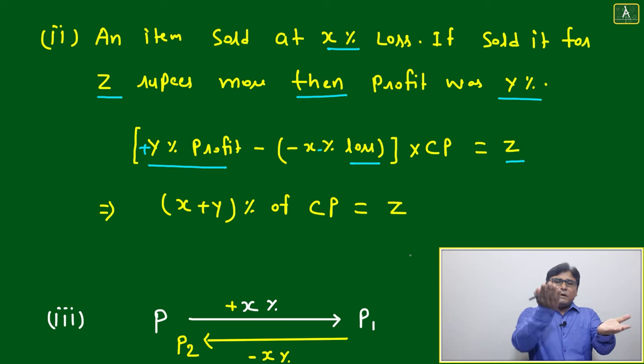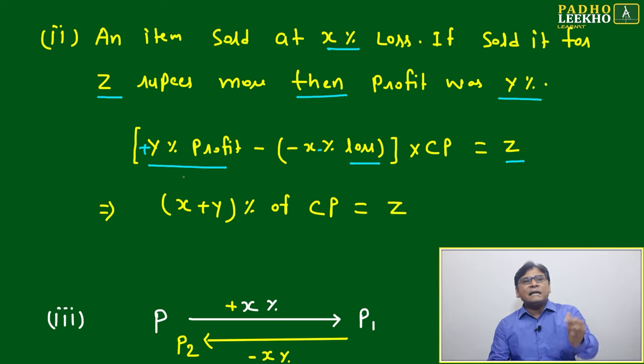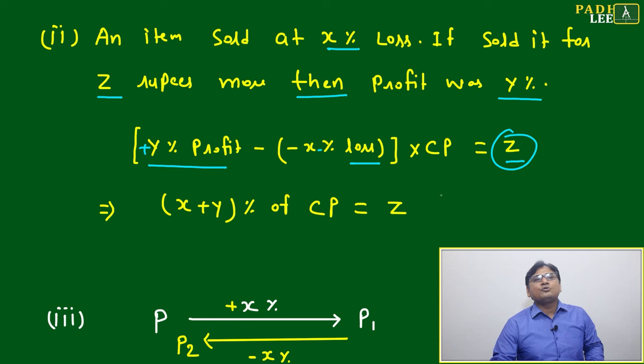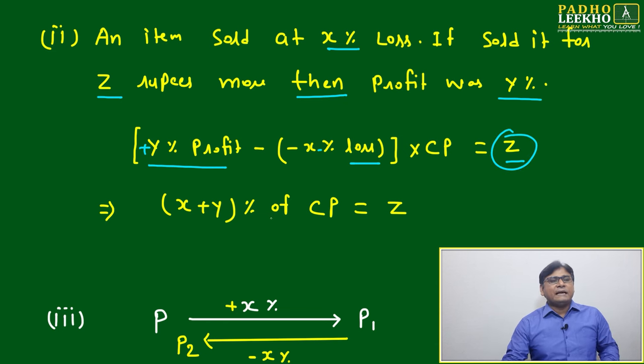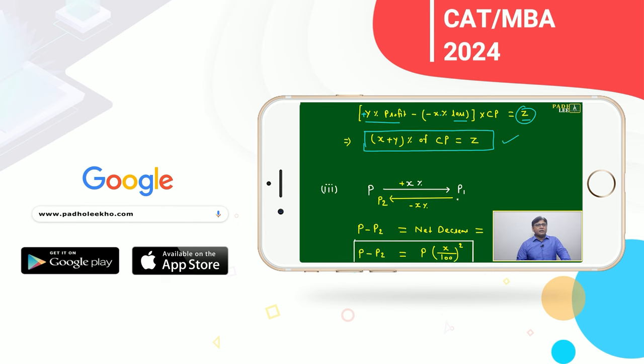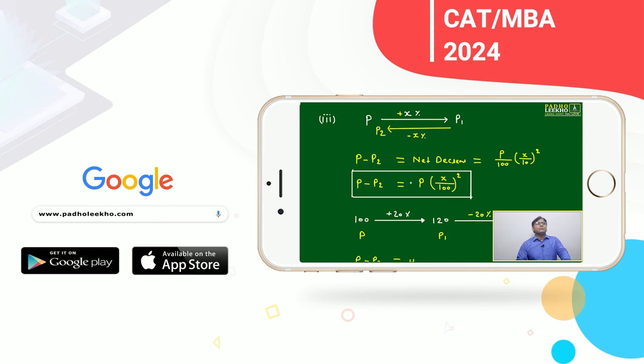Then this difference, this difference between profit and loss, how much you got? That should be must be equal to z. Then x plus y percent of cost price will be equal to z. That is the mathematical relation you will be able to use.